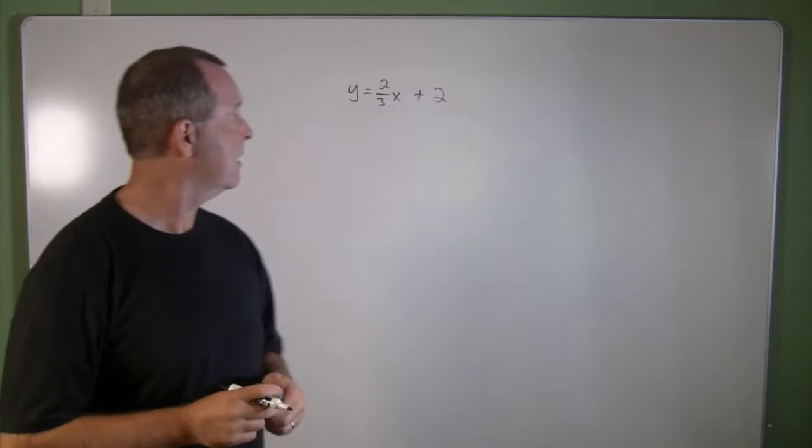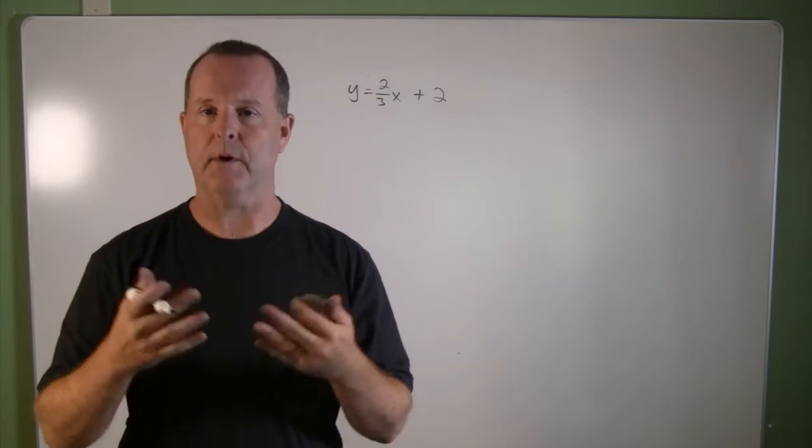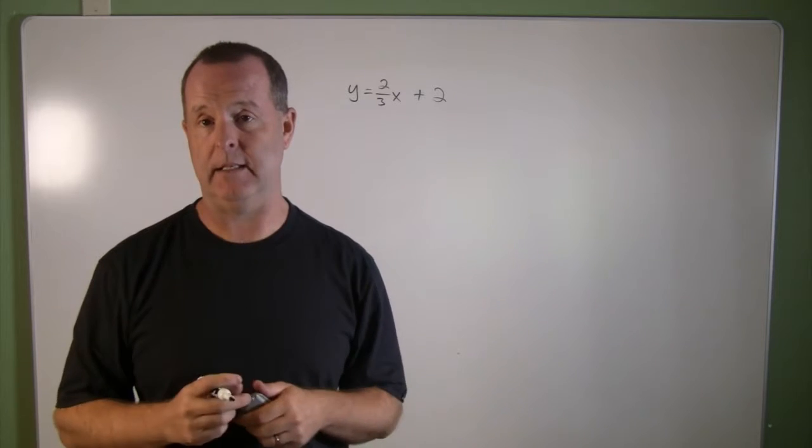Let's unpack this equation. The equation is y equals two-thirds x plus two, and from looking at it, can I graph this line?